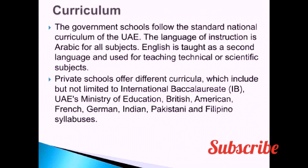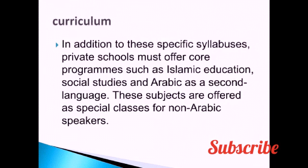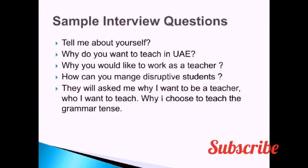The next one is curriculum. Government schools follow the standard national curriculum. The language of instruction is Arabic for all subjects. English is taught as a second language, used for teaching technical and scientific subjects. Private schools offer different curricula, which include international baccalaureate, British, American, French, German, Indian, Pakistani, and Filipino syllabuses. These are the curricula followed in MOE UAE. In addition to the specific syllabus, private schools must offer core programs such as Islamic education, social studies, and Arabic. These subjects are offered in special classes for non-Arabic speakers also.